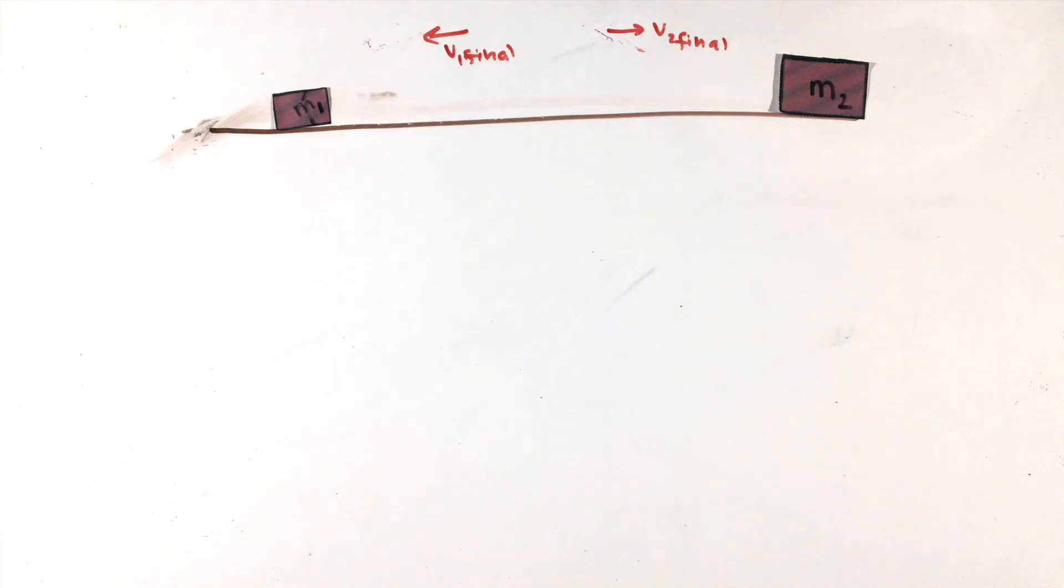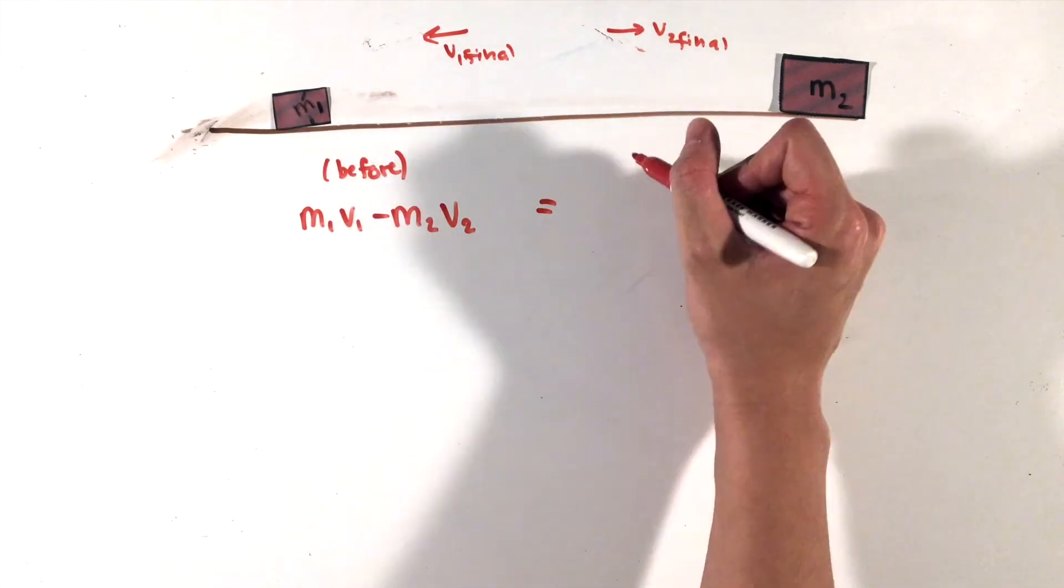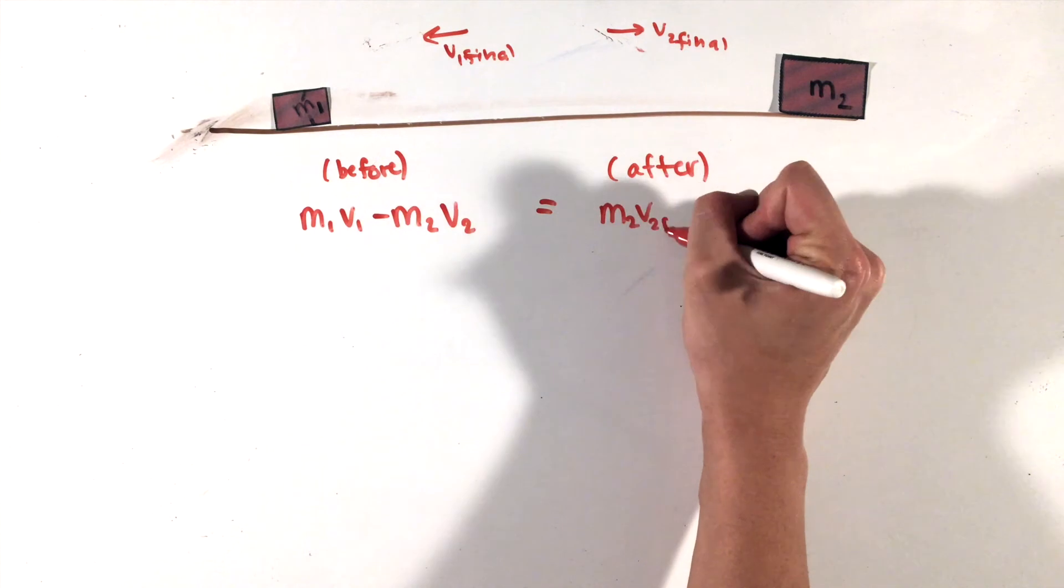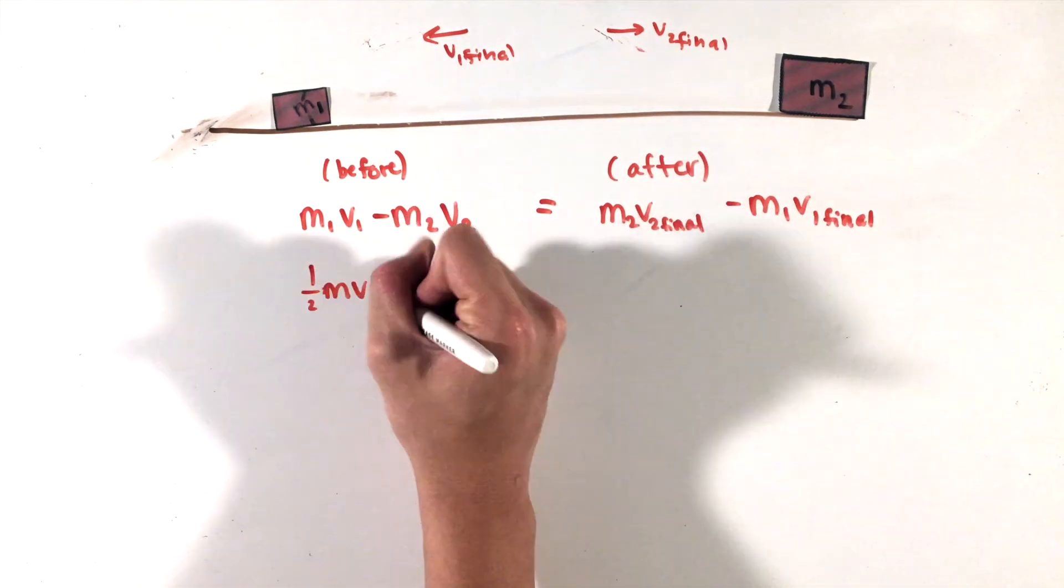To write our conservation of momentum equation, let's follow the same process as before, but this time understand the two masses will not combine, thus leaving our final momentum as the sum of some m1 v1 final and m2 v2 final. In addition to this equation,